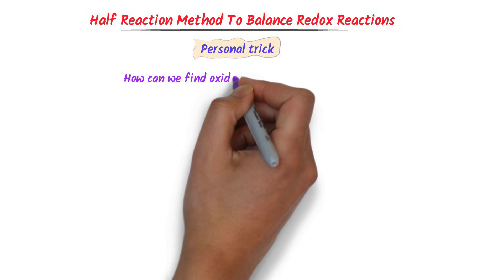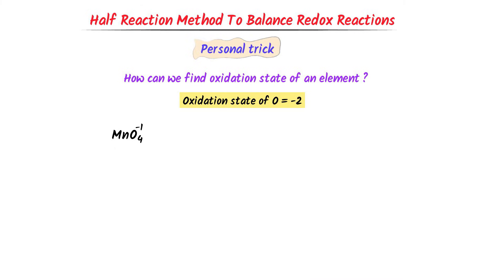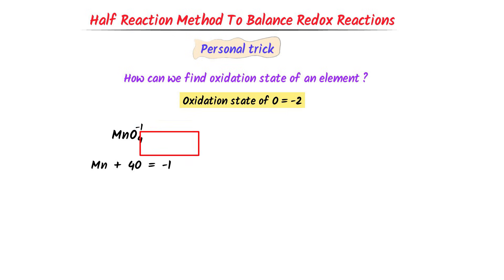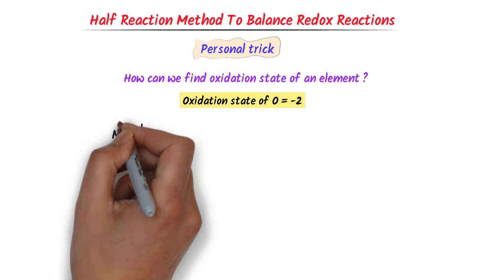Firstly, let me teach you how we can find the oxidation state of an element in any molecule or ion. For example, consider this ion. Find the oxidation state of manganese in this ion. We already know that the oxidation state of oxygen in their compounds is negative 2. I write: manganese + 4(oxygen) = negative 1, because there is one manganese atom and 4 atoms of oxygen, and the net charge is negative 1. I put the oxidation number of oxygen: manganese + 4(−2) = −1. I get manganese − 8 = −1. After calculation, manganese = positive 7. Thus, the oxidation state of manganese is positive 7 in this ion.